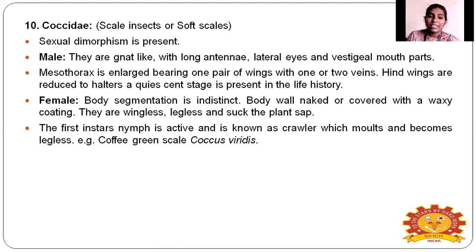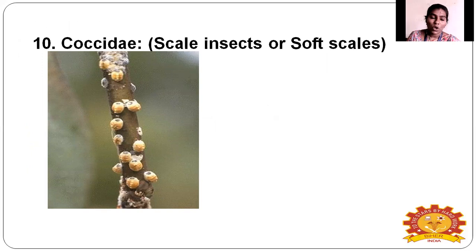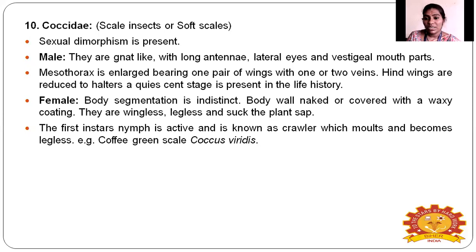Coccidae — the scale insects or soft scale. Sexual dimorphism is present: males are winged with long antennae; in females, body segmentation is distinct. The female body wall is naked and covered with wax. In males, hind wings are reduced to halteres; females are wingless and legless. The first instar is active and known as the crawler; after molting they become legless. Example: coffee green scale, Coccus viridis.